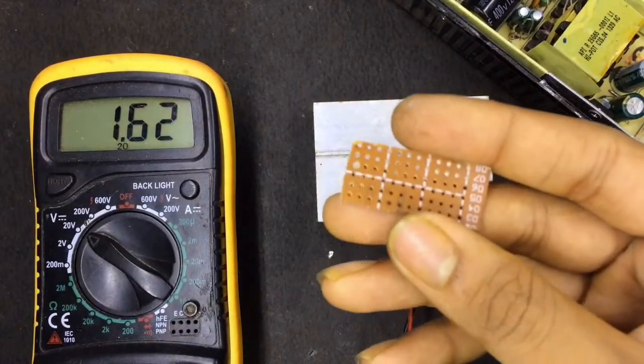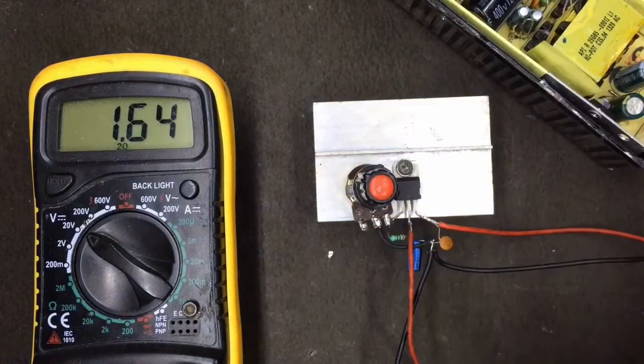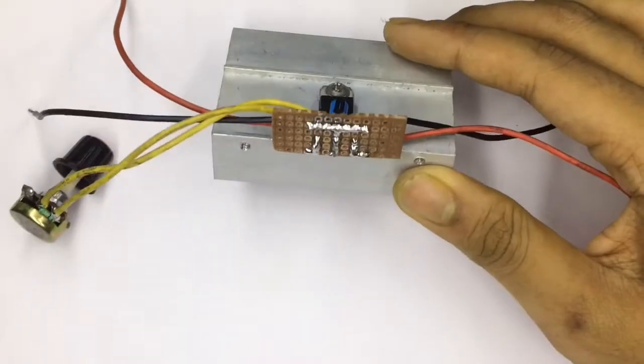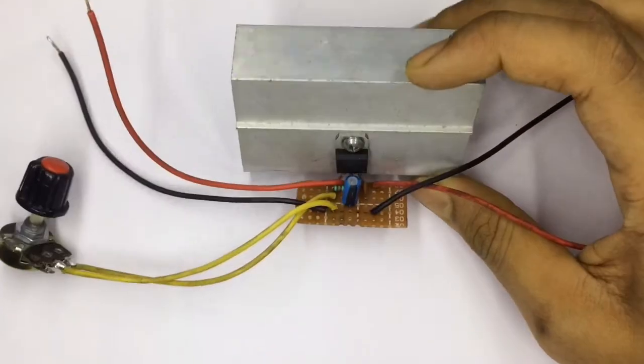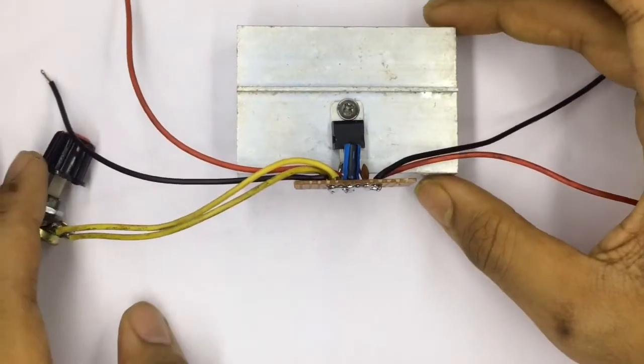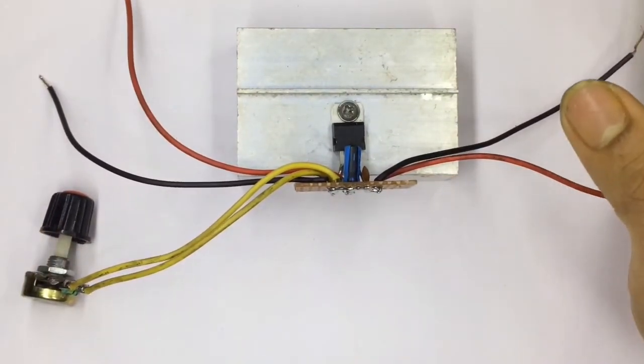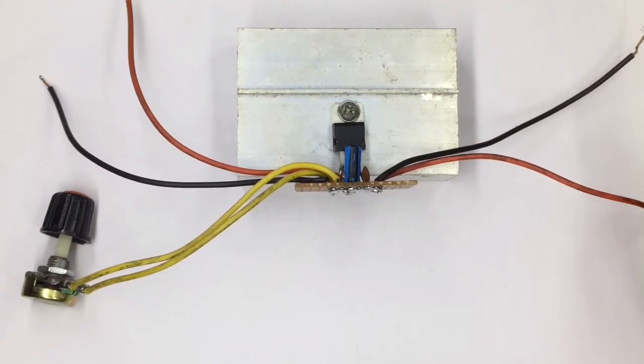Now I'm going to assemble it in this zero PCB. So the circuit is complete in this zero PCB and as you can see it's very small and simple. In my next power supply video I'm going to make a lab bench power supply with current adjuster and current boosting feature, so keep visiting my channel for more updates.